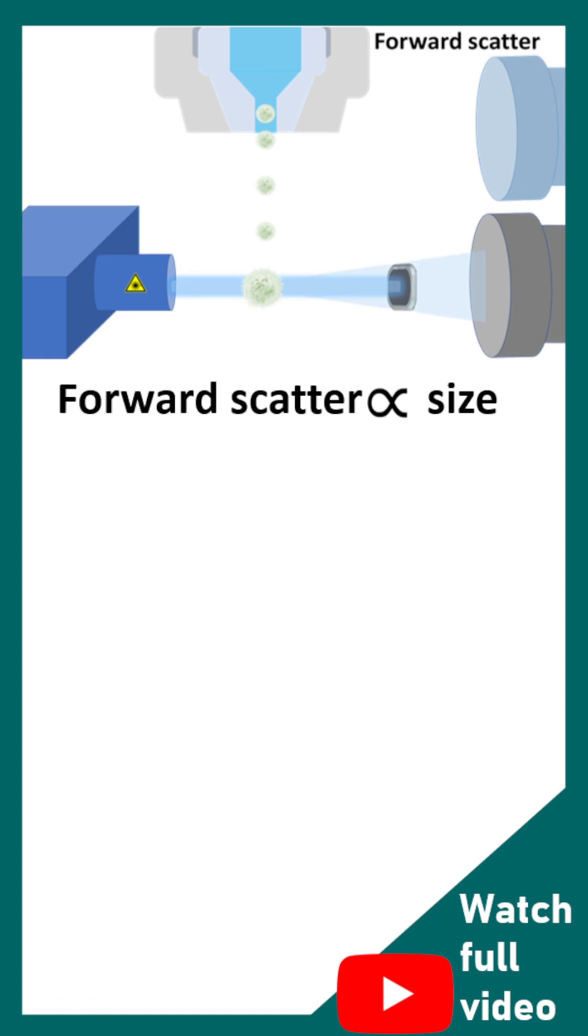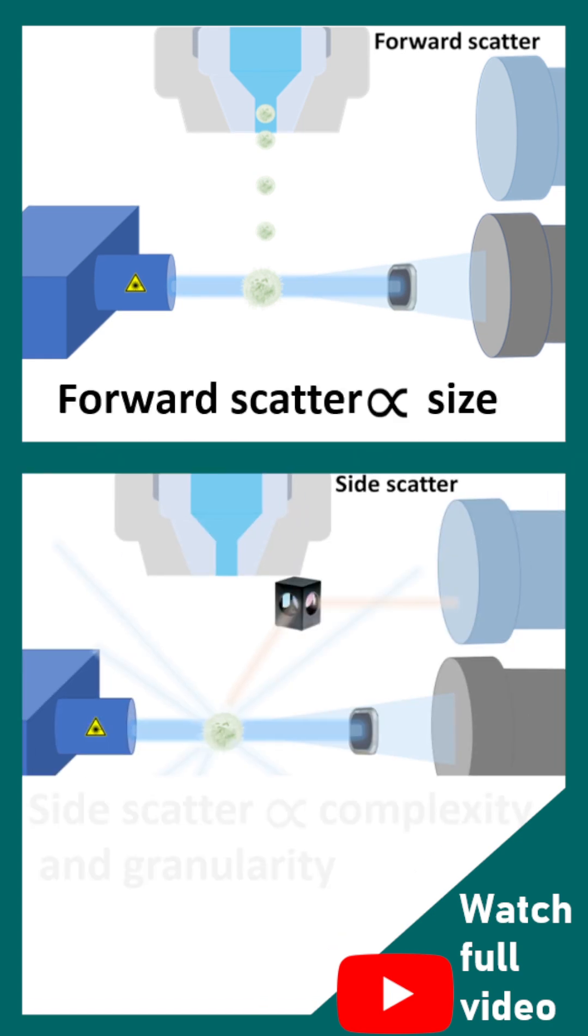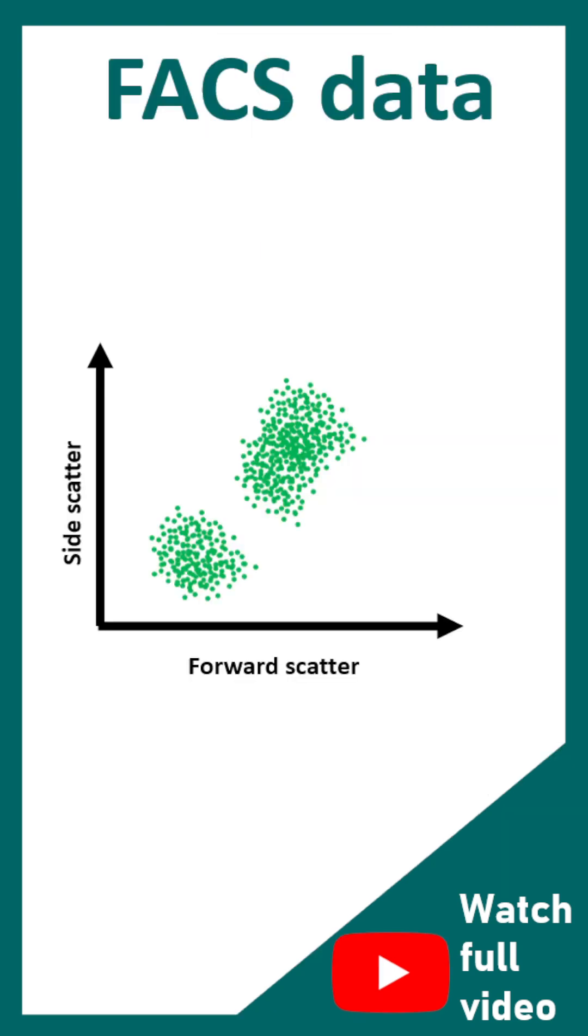Forward scatter is a measure of size. It is proportional to size and the side scatter is proportional to the complexity or granularity of the cell.